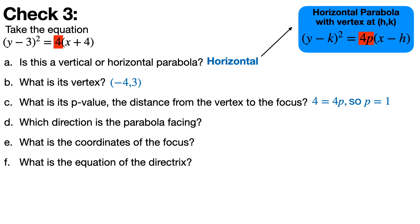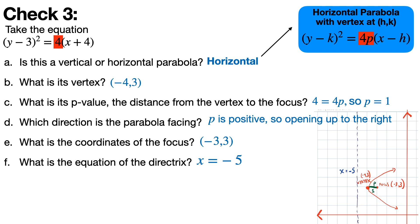Which direction is the parabola facing? Well, p is positive in this case, so it's opening up to the right. And it might be useful to just simply draw the picture of this thing. So we're given the vertex by the formula itself, we have the p-value, and we know it opens to the right. And so the focus is going to be 1 to the right of the vertex, and the directrix is going to be 1 to the left of the vertex.